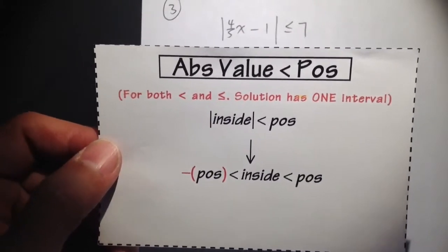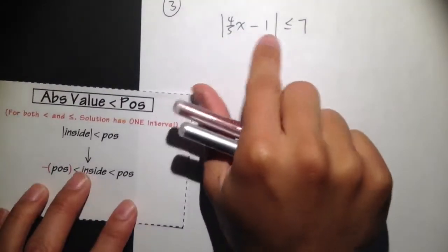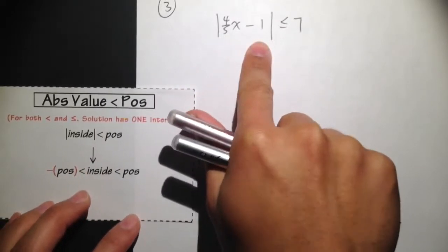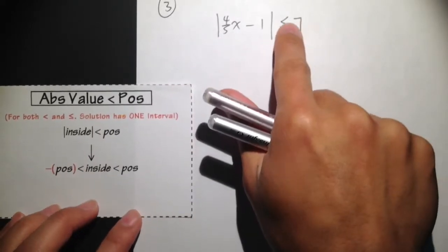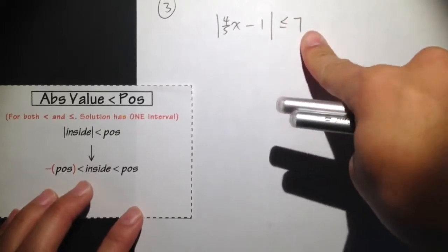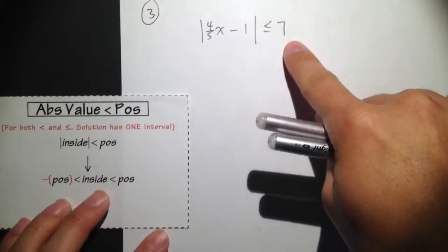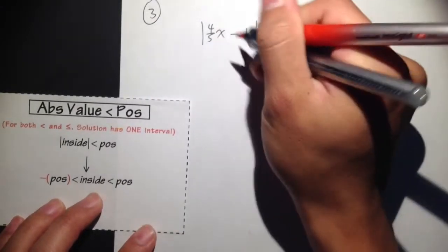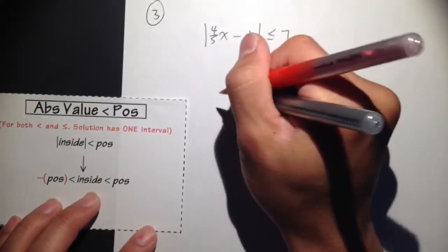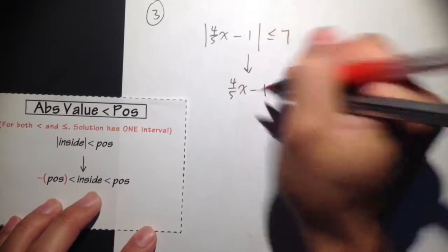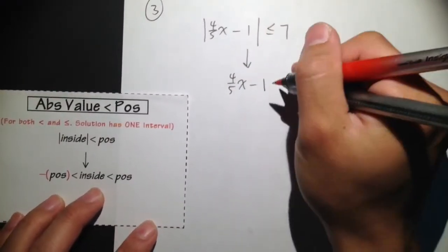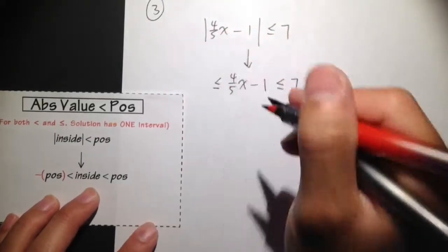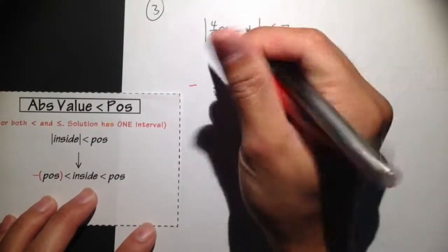Let's continue with another example. Here we have absolute value. Again, we have the absolute value isolated on the left hand side already. Less than or equal to a positive number, a positive 7. So we can just go ahead and take out the absolute value, put it inside in the middle, 4 over 5x minus 1.